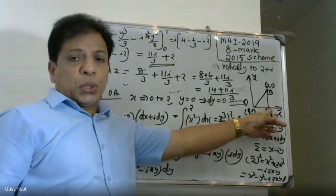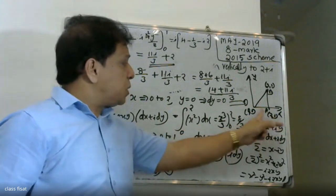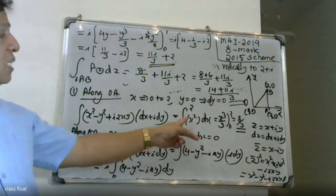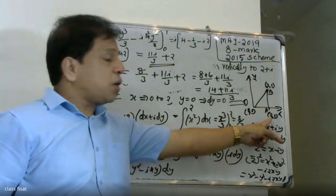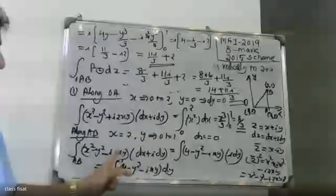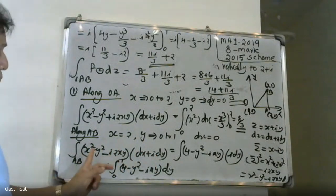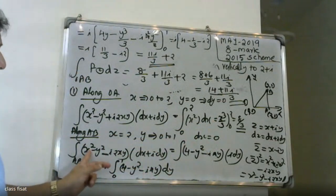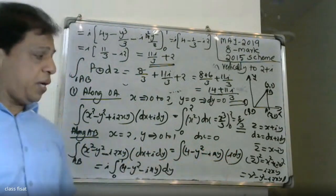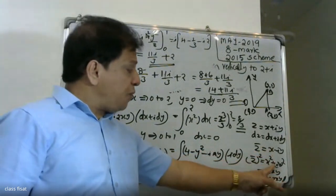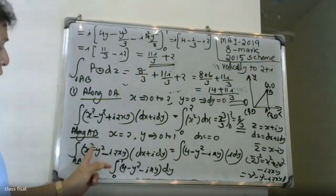On OA, y equals 0 as x varies from 0 to 2. On the AB part, x is fixed at 2, and y varies from 0 to 1. We write x² equals 4, so the integrand becomes 4 minus y² minus i times 2xy, giving 4 minus y² minus i times 4y, times i dy.